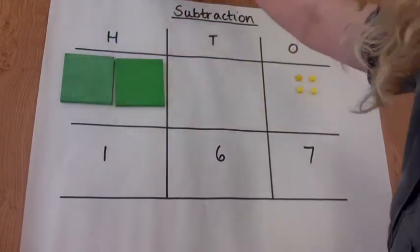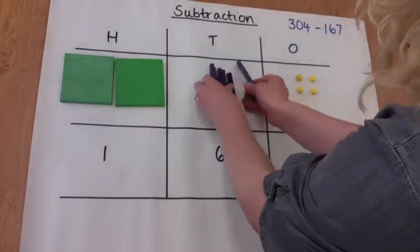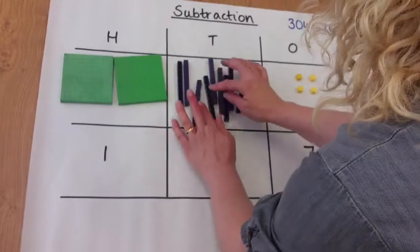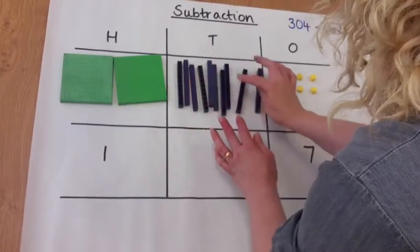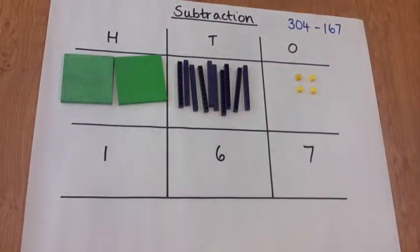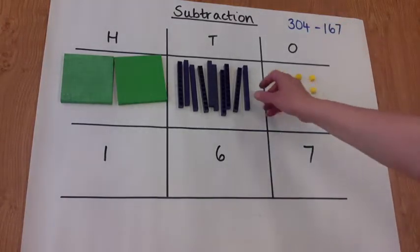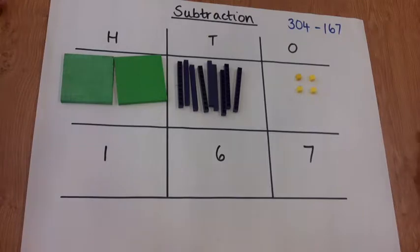So we need to regroup from the hundreds column. We take 100 and regroup it into ten tens, which is great for the tens column but it doesn't help us with the ones. We still need to regroup one ten into ten ones.